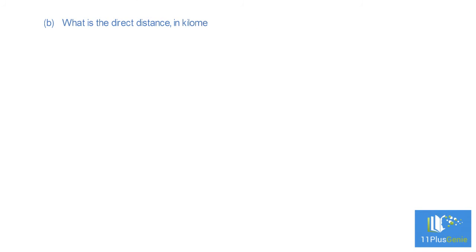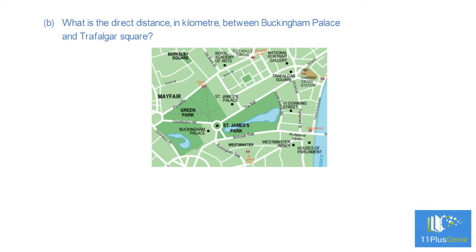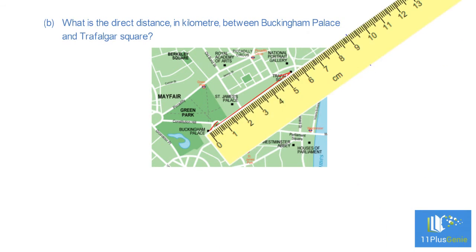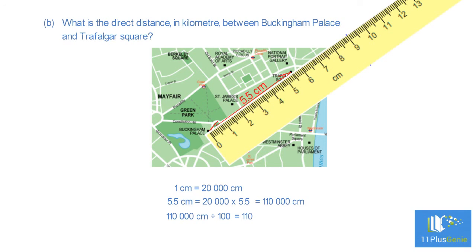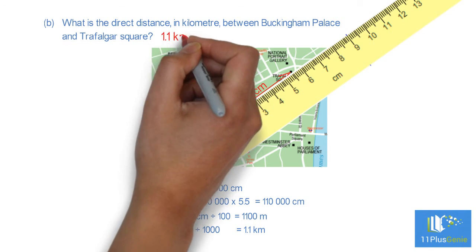Part B: What is the direct distance in kilometers between Buckingham Palace and Trafalgar Square? The measured distance is 5.5 centimeters. The actual distance is twenty thousand times 5.5, which equals one hundred and ten thousand centimeters. Dividing by one hundred gives one thousand one hundred meters, and dividing by one thousand gives the final answer: 1.1 kilometers.